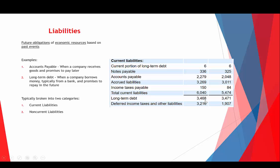They took out a long-term loan that's coming due at various points in time, and the piece now coming due within one year is classified as the current portion.